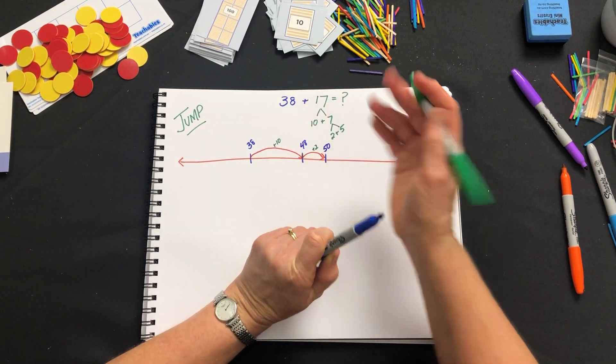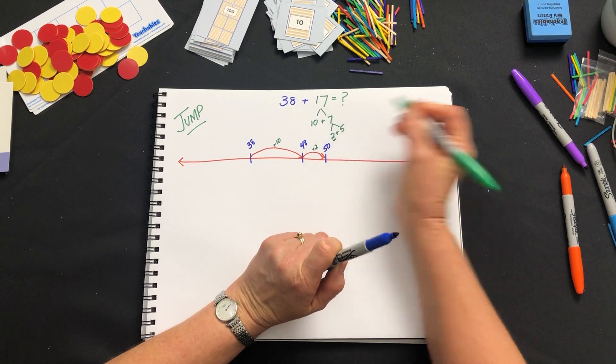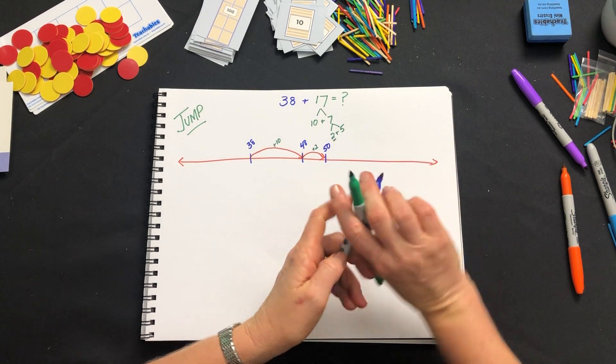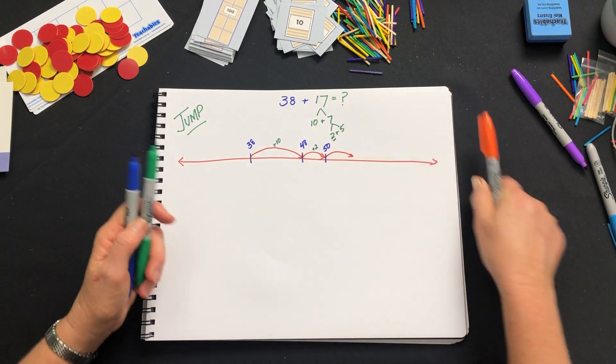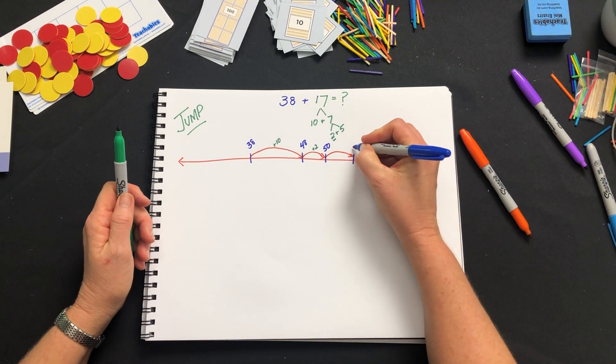So I added the 2 to get me to 50 and now I'm going to get the right colored pen and jump 5 to get me to 55.